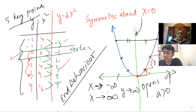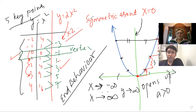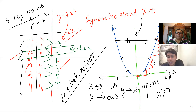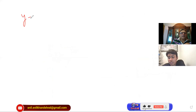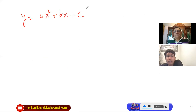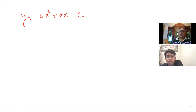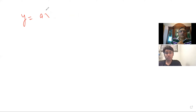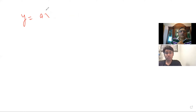End behavior is just x moving an infinite amount to the left or right and y moving an infinite amount up or down. We cannot be at infinity, but we are saying when we are approaching a very large number — that is what we mean when I draw this arrow. When x approaches a large negative number, which is like negative infinity, y approaches positive infinity. When x approaches large negative number, y approaches positive infinity. So both sides we are going up, approaching positive infinity, when a is positive.